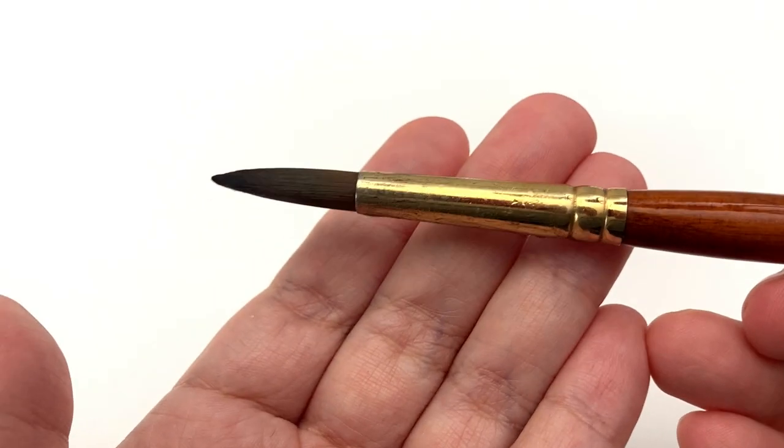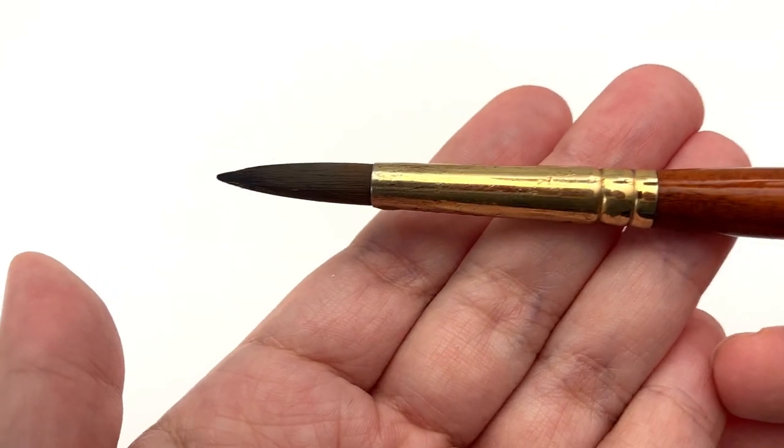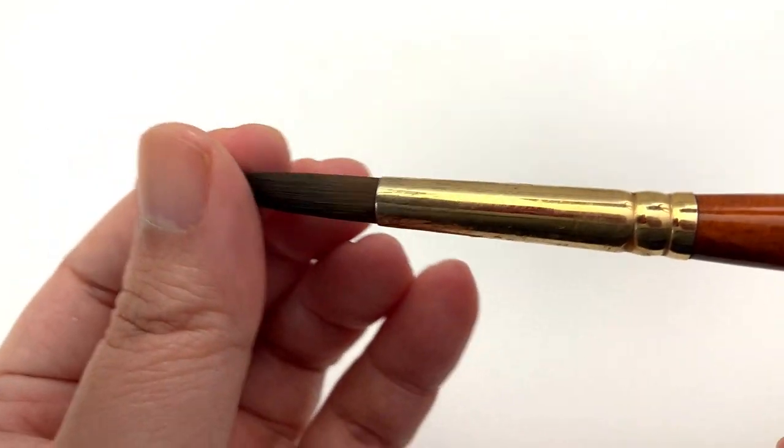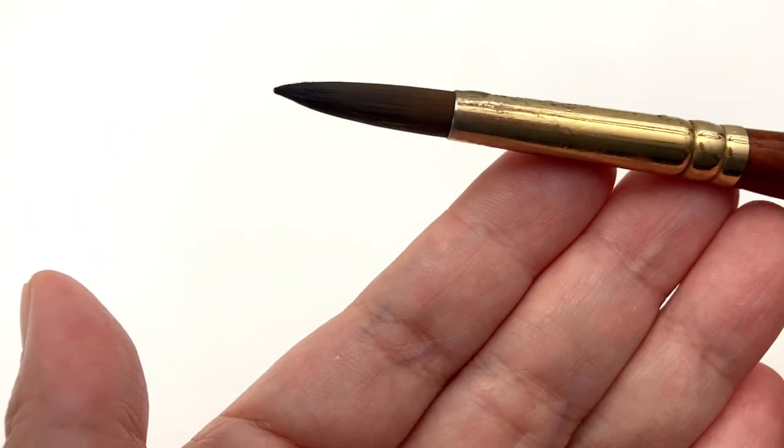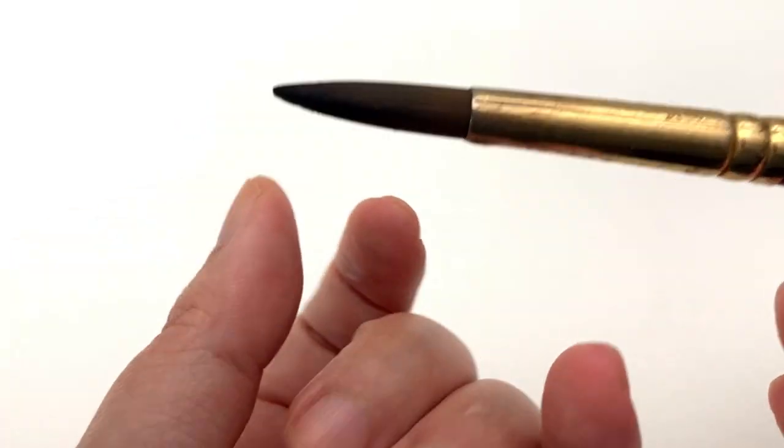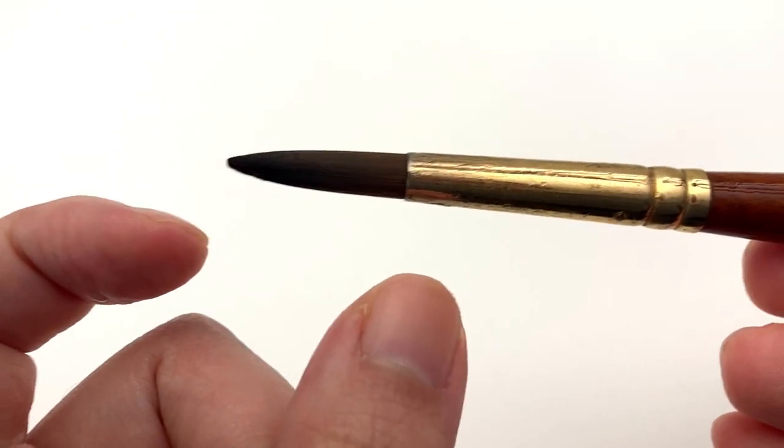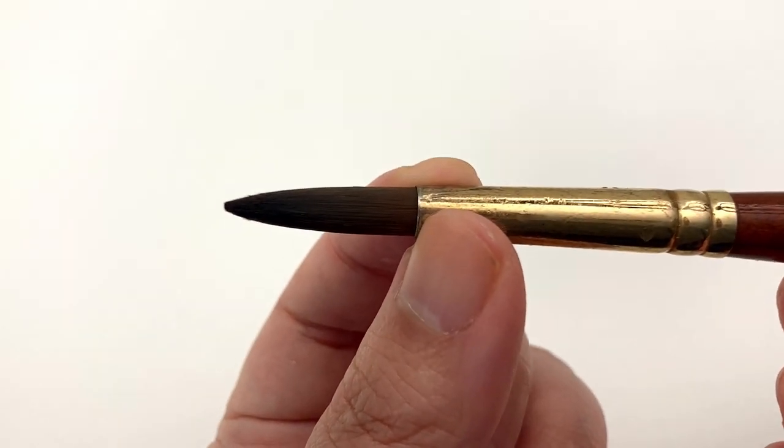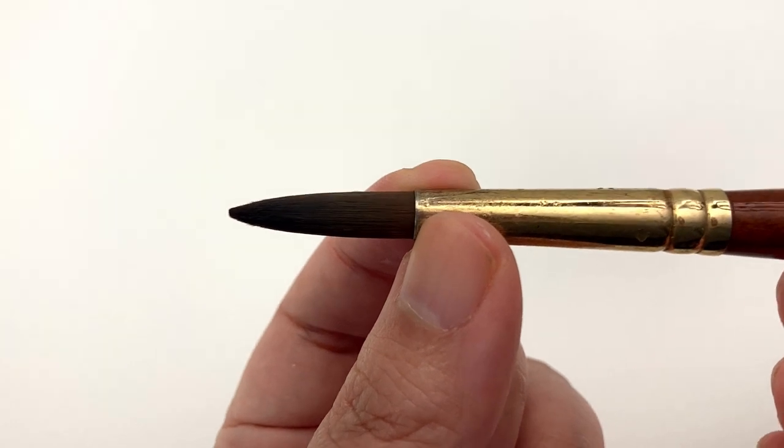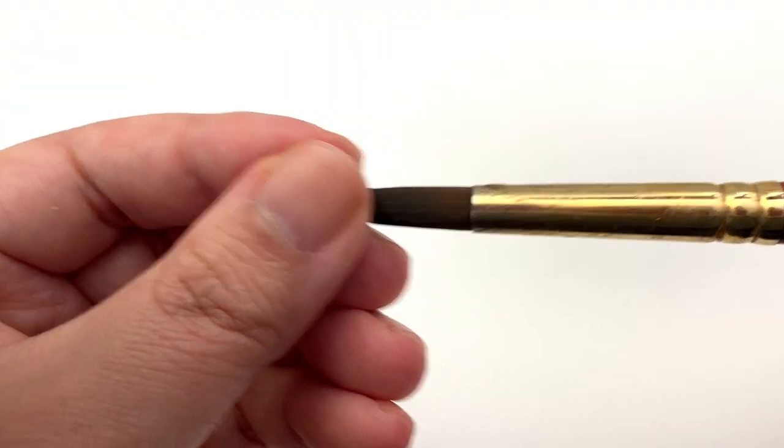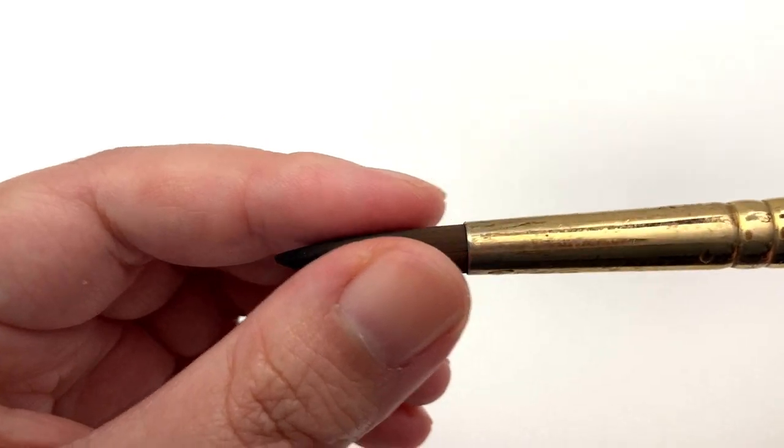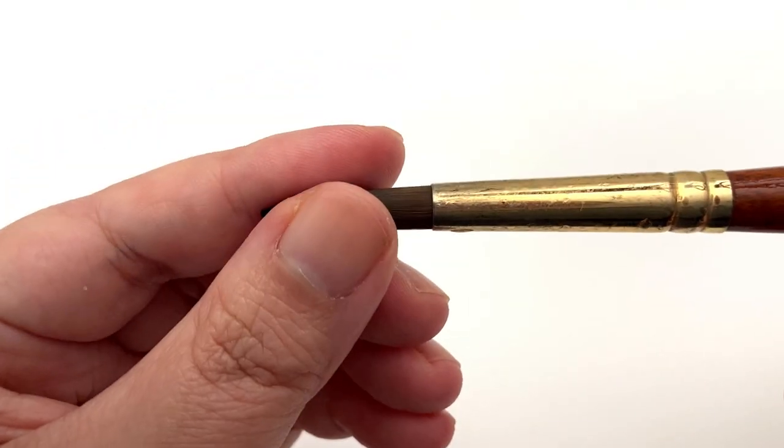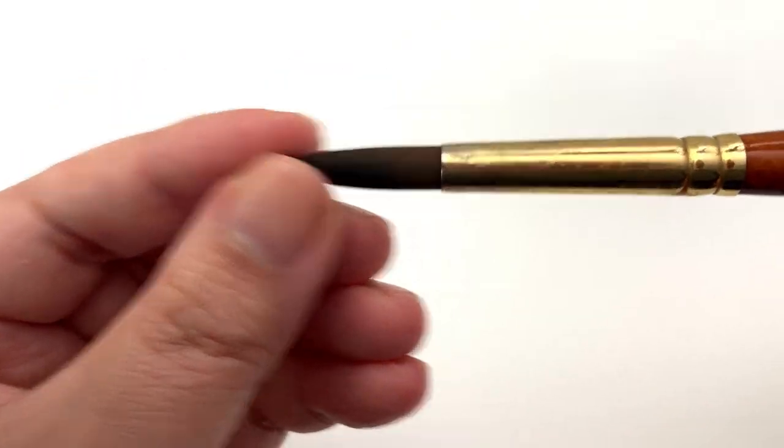It's definitely a round brush rather than a pointy brush. It's a pointy brush, a technical word, but for what I need it for with swatching, it's just perfect. The bristle length is 26 millimeters, same as the Princeton Heritage. And the diameter is 6.8, so it's a little bit wider.